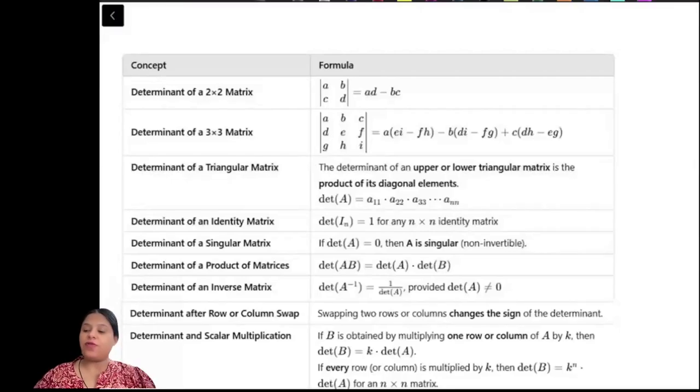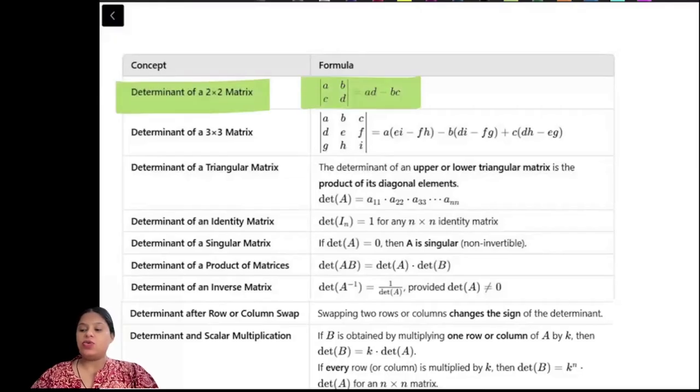Let us look quickly at the formula sheet of determinants. For a 2 by 2 determinant, the determinant of this will be this minus this, so AD minus BC.